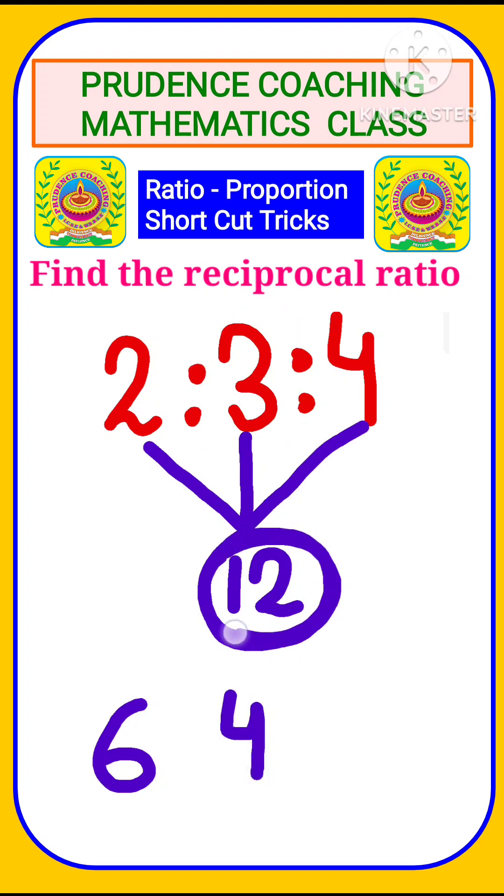Next, again we have 12. Divide this 12 by the next number, that is 4. 12 divided by 4, you are getting 3. So this is your answer: 6:4:3.